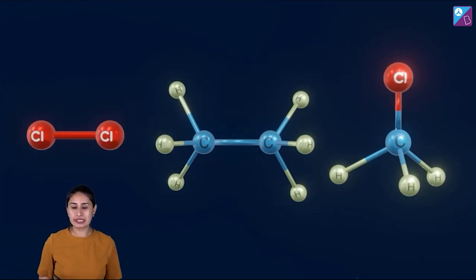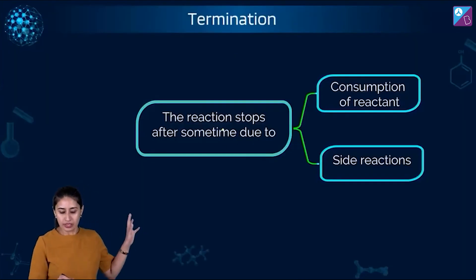Termination can be because of two reasons. Number one, the reaction stops after sometime due to consumption of reactant. Everything has been consumed. Nothing is left. No more chlorine free radical can be formed. What else? Now everybody will manage in whatever free radicals are present because free radicals are reactive.